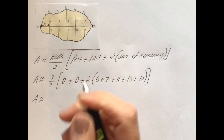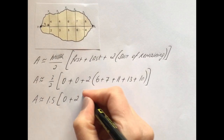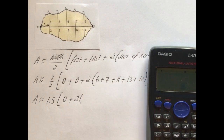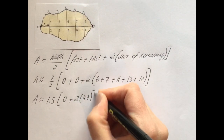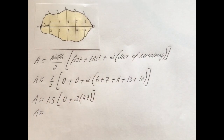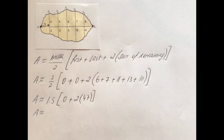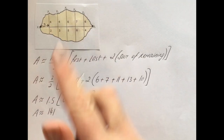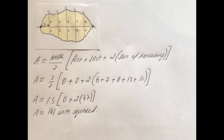So we have 3 over 2, which is 1.5. Zero plus zero is zero. Then twice the sum of the remaining heights: 6 plus 7 plus 11 plus 13 plus 10 equals 47. So the calculation is 1.5 times (0 plus 2 times 47), which equals 141. Since no units are given, we say units squared - because of course it's area.